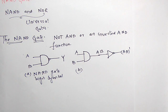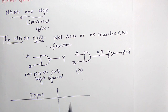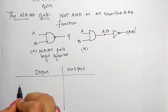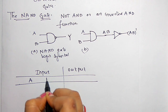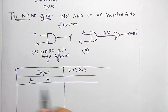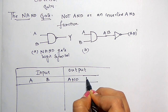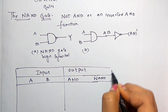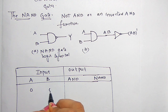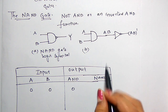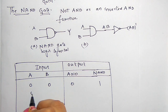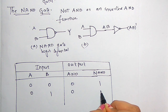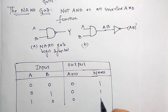The truth table is as follows. Inputs are A and B, with the output of AND and the output of NAND. If inputs are 0, 0, AND output is 0, so NAND output is 1. If inputs are 0 and 1, AND output is 0, NAND output is 1. If inputs are 1 and 0, AND output is 0, NAND output is 1. If both inputs are 1, AND output is 1, NAND output is 0.